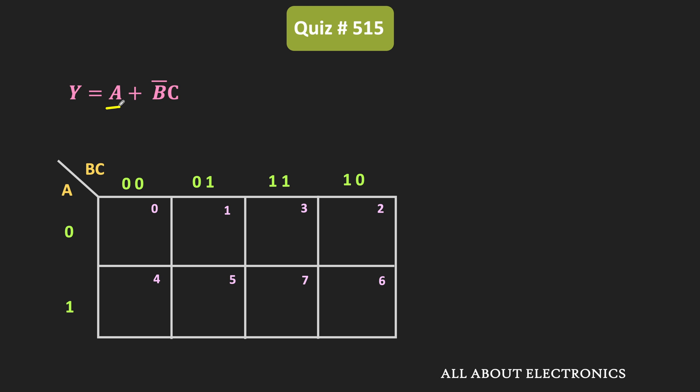In the K-map, variable A can be represented by these four min terms. As you can see, in the group of these four min terms, variables B and C are changing, while variable A remains constant. Therefore, this group of four min terms represents variable A.